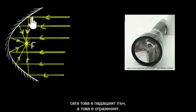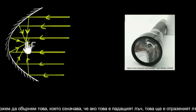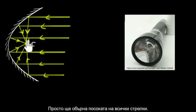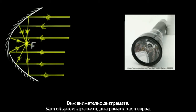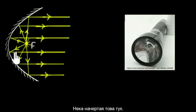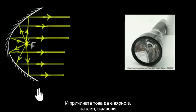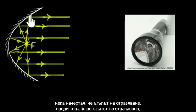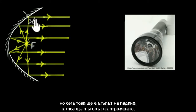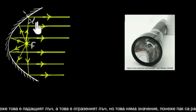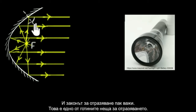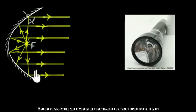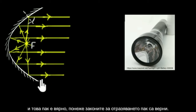What I mean is: if this is the incident ray and this is the reflected ray, we can reverse this — so the previously reflected ray becomes the incident ray and vice versa. Even if we interchange the incident and reflected rays, the angle of incidence and angle of reflection will still be equal to each other. The rule of reflection still works. That's one of the cool things about reflection — you can always reverse the rays of light and it'll still hold true.